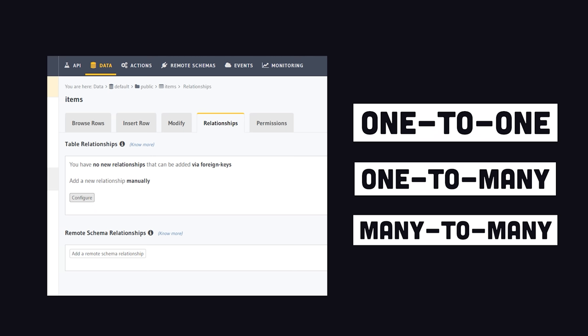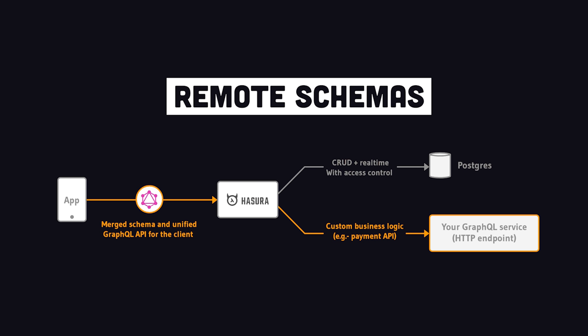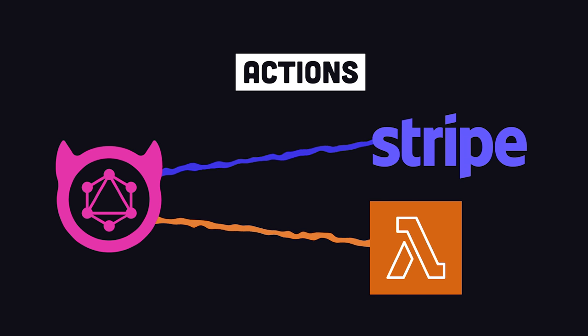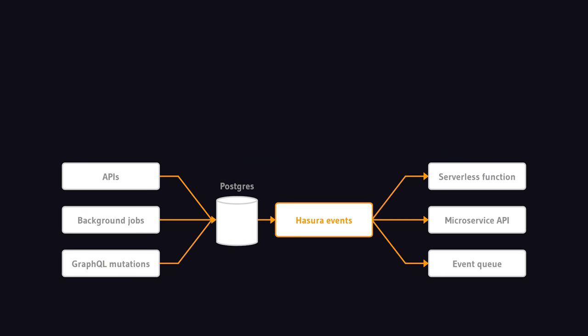In addition to databases, you can also connect third-party APIs to your schema to create a single source of truth for all your data. In some cases, you may want to extend the schema with your own custom queries or mutations. Actions provide a way to implement custom business logic in an external server or serverless function, to read and write data in more complex ways.